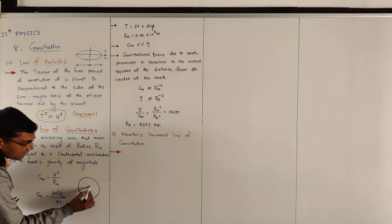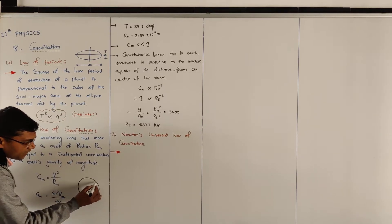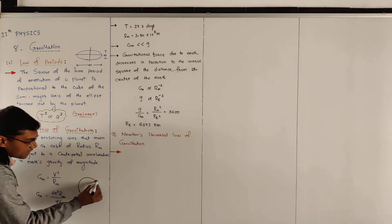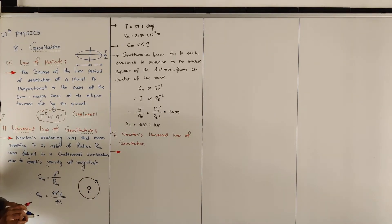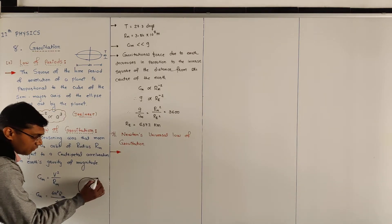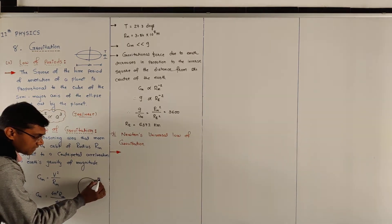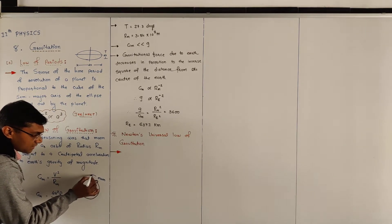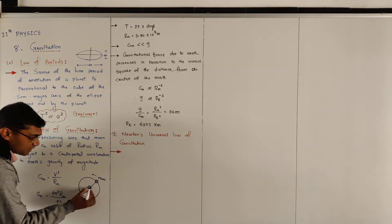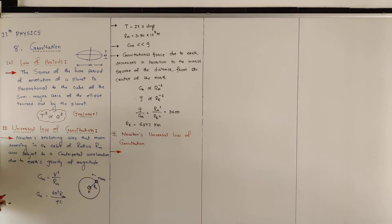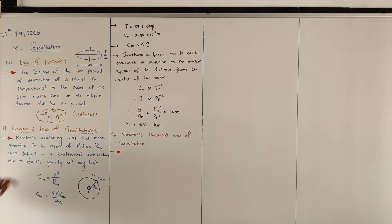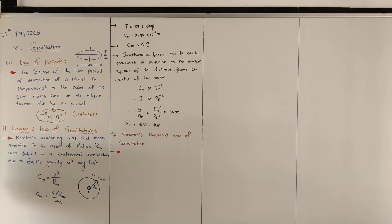Consider that here is the Earth, and here is the Moon's orbit. The Moon is the only natural satellite of Earth. So the Moon has an orbital radius r_m. Newton's reasoning was that the Moon revolving in an orbit of radius r_m is subject to centripetal acceleration.